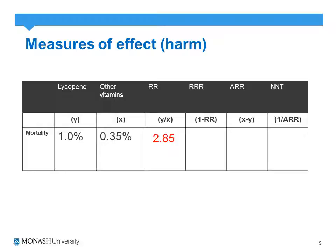One way to interpret this relative risk of 2.85 is to state that for those patients taking lycopene, their risk of dying from cancer almost triples. Another way is to look at relative risk reduction, which is 1 minus the relative risk. In this case we get a relative risk reduction of minus 1.85. Because of this negative value, we are not calculating a relative risk reduction — we're calculating a relative risk increase. Taking lycopene in our hypothetical scenario increases the risk of dying from cancer by 185%.